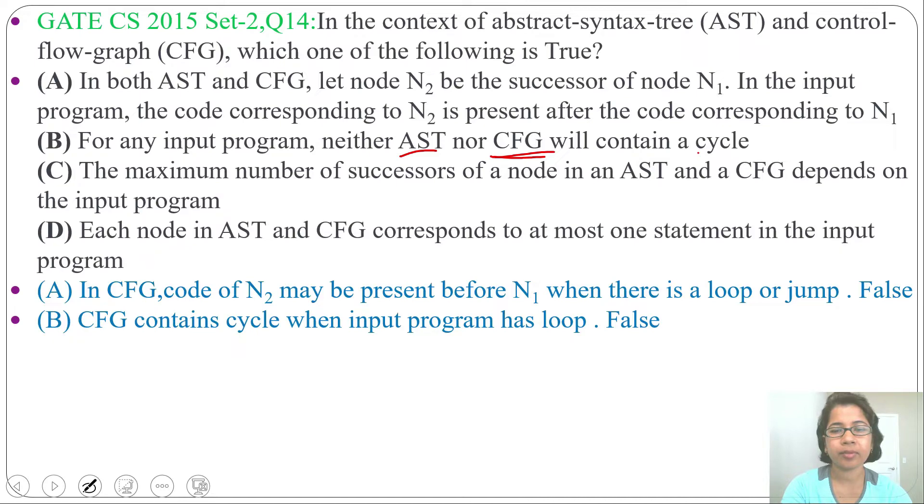Next option C: the maximum number of successors of a node in an AST and control flow graph depends on the input program. Yes, this is true.